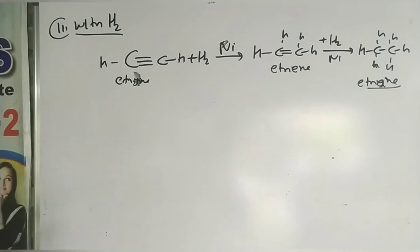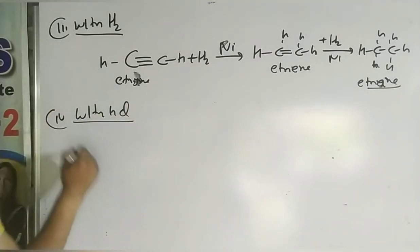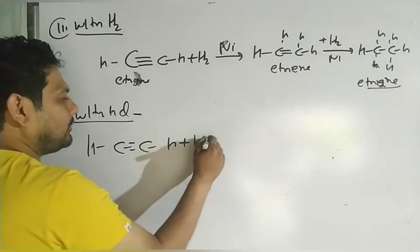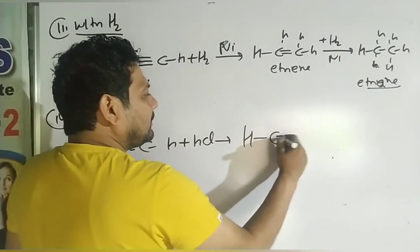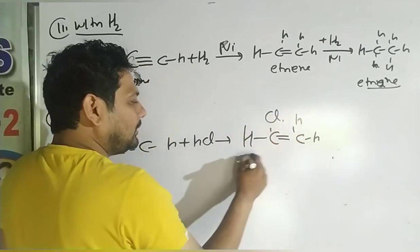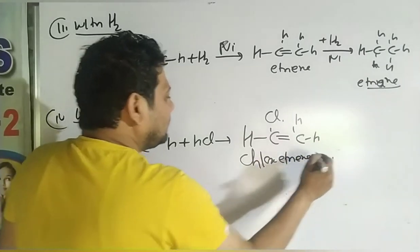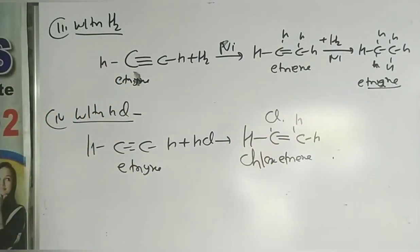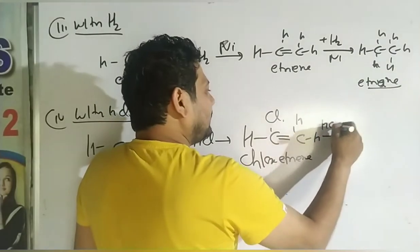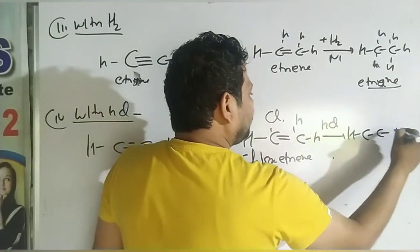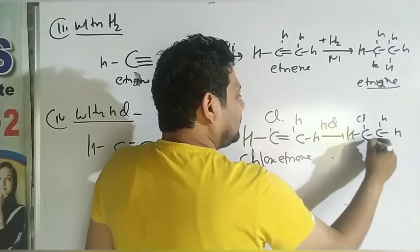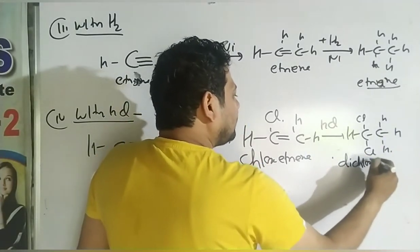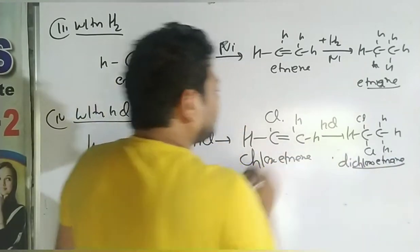What happens when ethyne is heated with hydrogen in the presence of nickel catalyst? First it forms ethene, then ethane. With HCl: ethyne has a triple bond. Adding HCl gives chloroethene — the triple bond becomes a double bond with H on one carbon and Cl on the other. Adding another HCl gives dichloroethane.